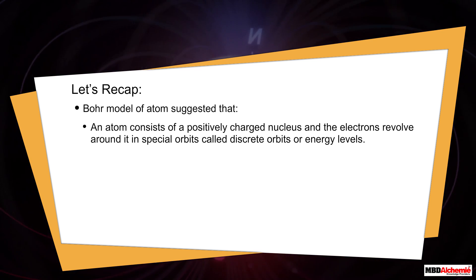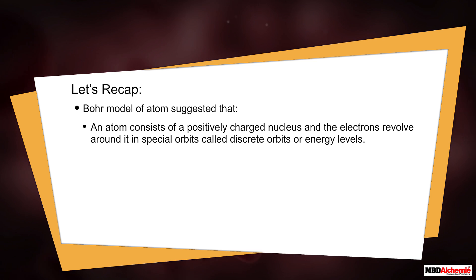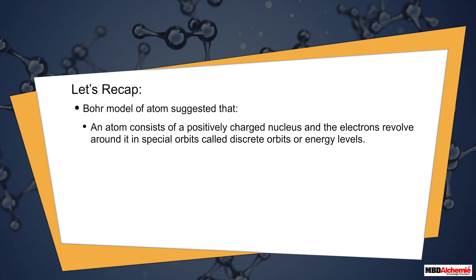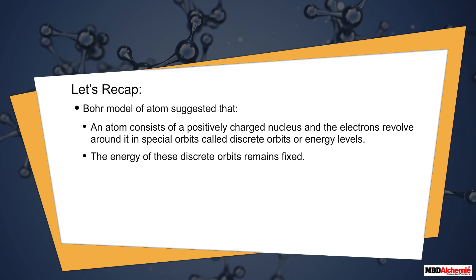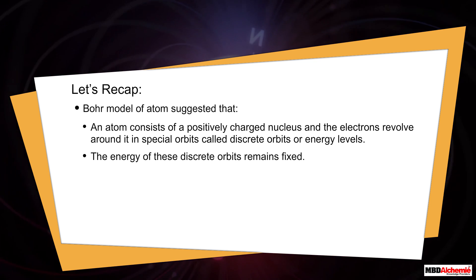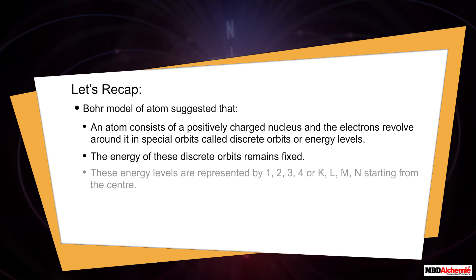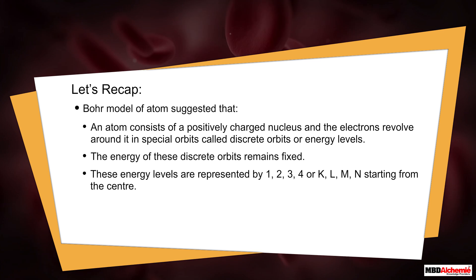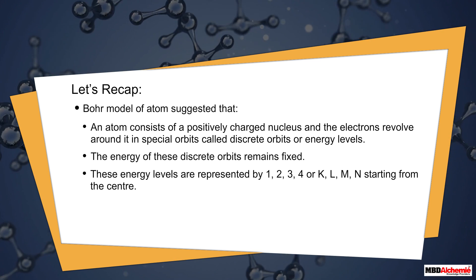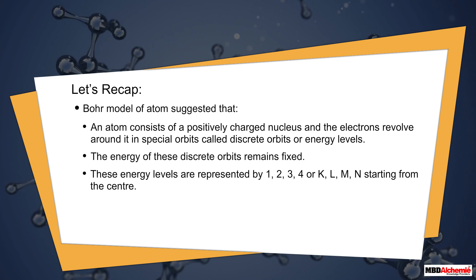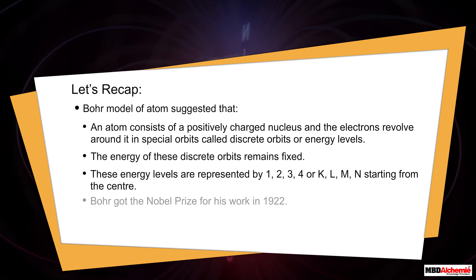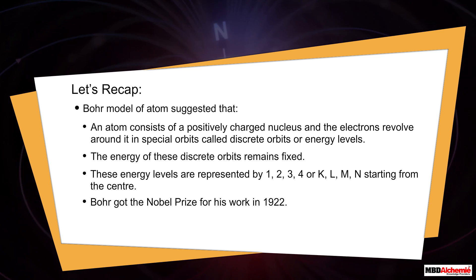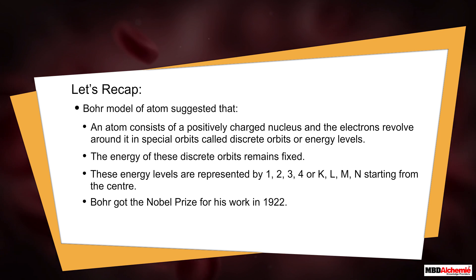Let's recap. Bohr's model of the atom suggested that an atom consists of a positively charged nucleus and electrons revolve around it in special orbits called discrete orbits or energy levels. The energy of these discrete orbits remains fixed. These energy levels are represented by 1, 2, 3, 4 or K, L, M, N starting from the center. Bohr received the Nobel Prize for his work in 1922.